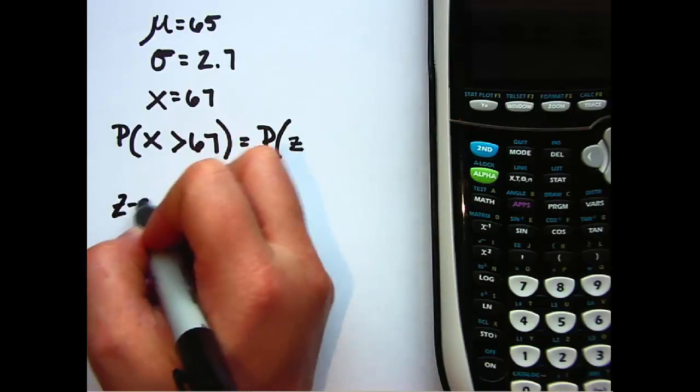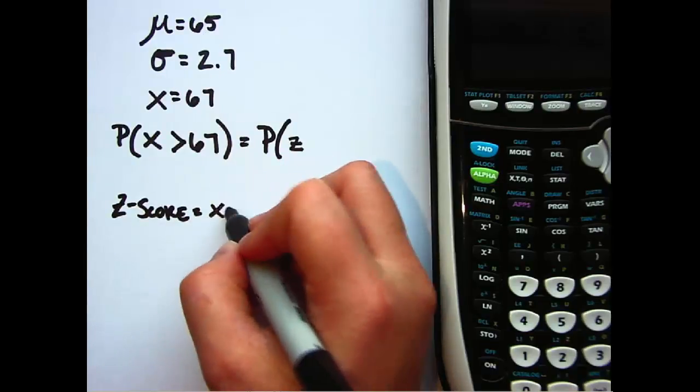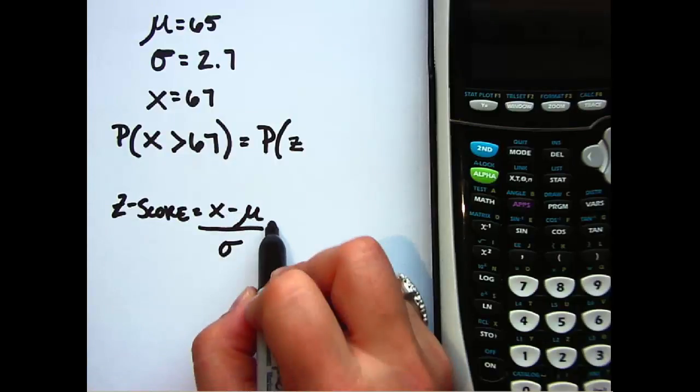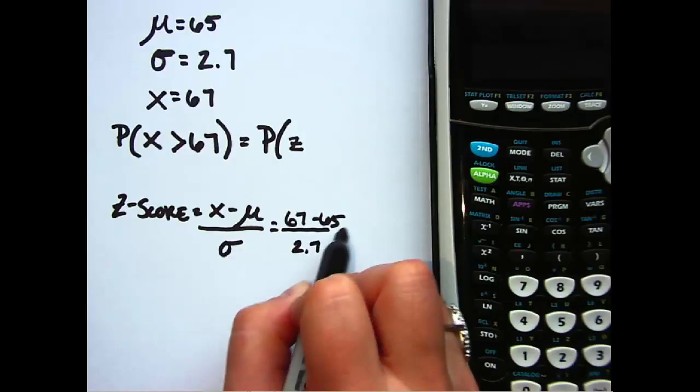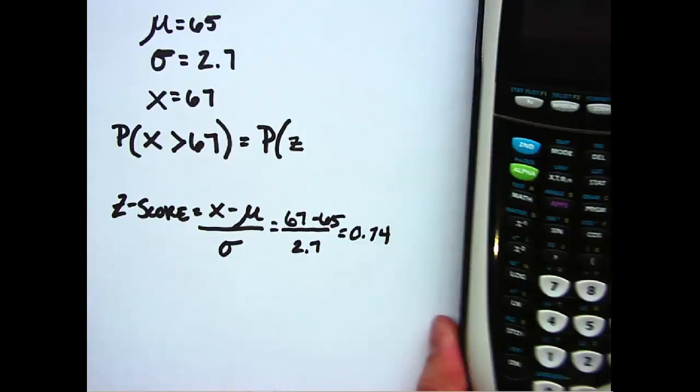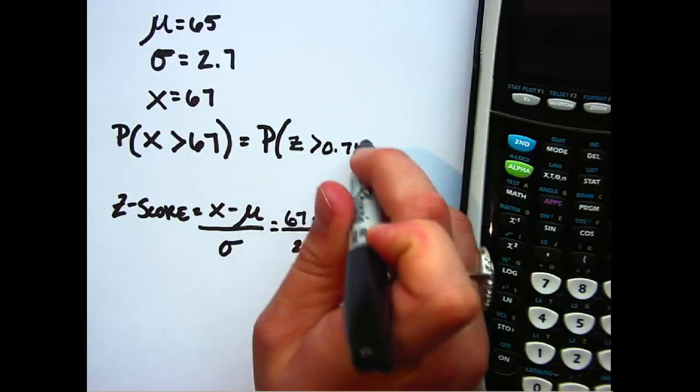standard deviation. So to do that, I'm going to calculate a z-score, which as you may recall from the last videos that we've been looking at, you take x minus μ and divide by σ. So we have 67 minus 65 divided by 2.7, so my z-score is 0.74, which means that I'm 0.74 standard deviations above the